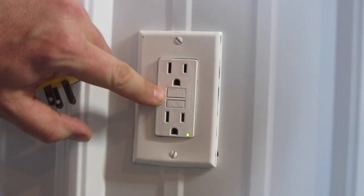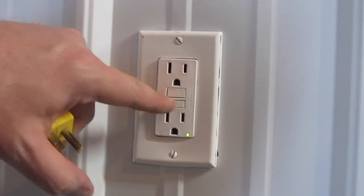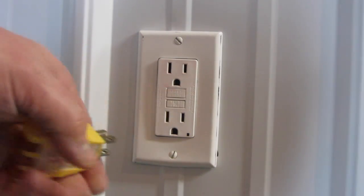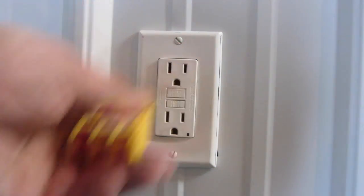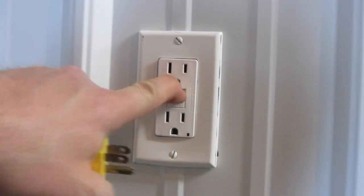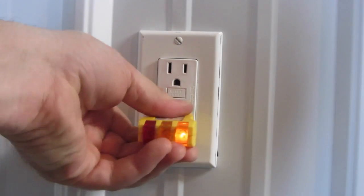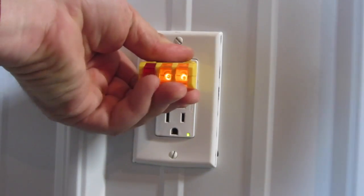I will also test the trip buttons on the GFCI. You hit the test button and that kills the power to the outlet, as you can see. Hit the reset button and that turns the power back on. Those work as well.